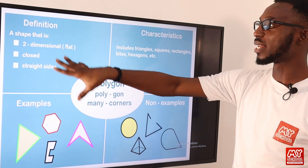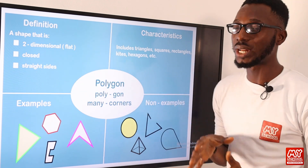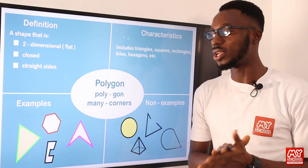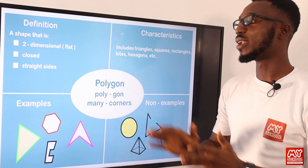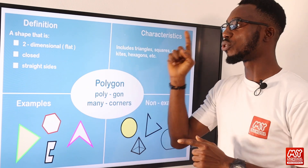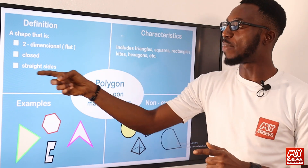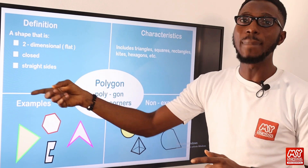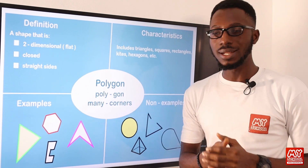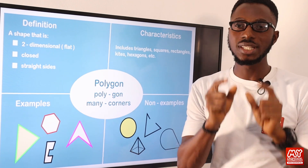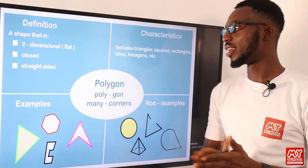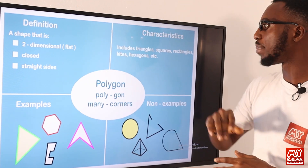A polygon is actually a shape that is two-dimensional. It is a 2D shape that is flat, and of course it is closed and it is bounded by straight sides — at least three straight sides.